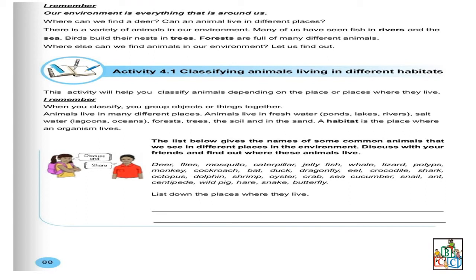On nous dit: list down the places where they live. Donc, par rapport à cette liste, il va falloir dire où est-ce que chaque animal vit. Maintenant, vous remarquerez que c'est une question 'Discuss with your friends.' Vu que pour le moment on ne peut pas être ensemble pour faire un discuss, ce que je vais vous demander — ceci n'est pas un homework vu que c'est un discuss. Ce que vous allez faire, c'est d'essayer de deviner les endroits où ces animaux vivent, et de noter vos idées dans votre cahier, afin que dès que c'est possible, on va faire le discuss tous ensemble.